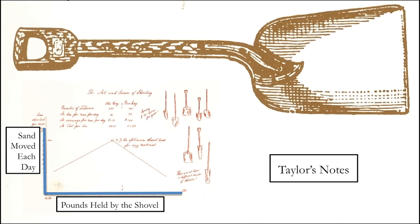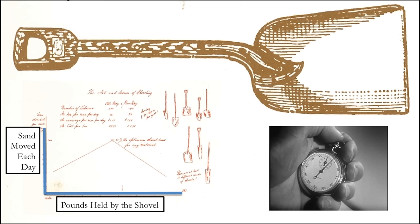He said, I want you to take this shovel, which held about 26 pounds, and move your piles from here about 10 feet over to there. They worked at it all day, and he kept track of everything with a clipboard and a timer. At the end of the day, they went home, and overnight he cut off a little piece of metal off of each shovel so that it was about a pound lighter.